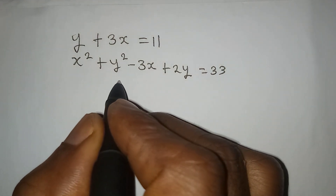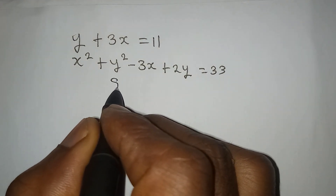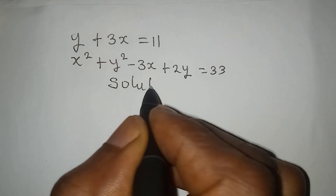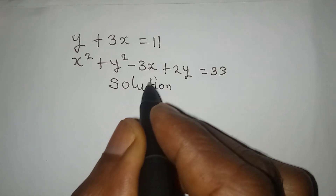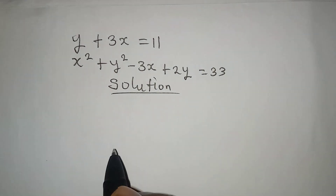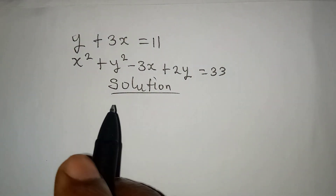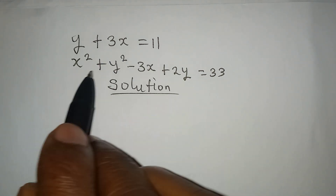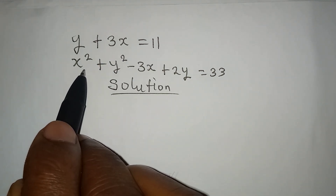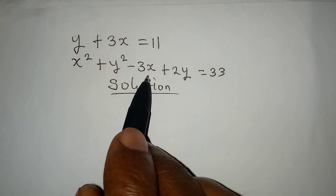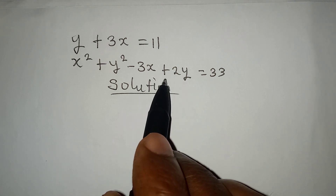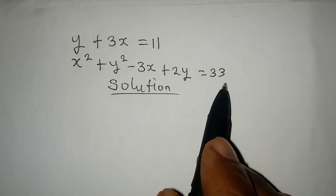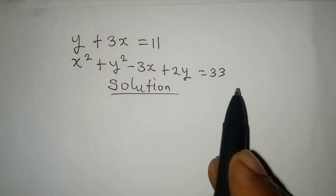Hello everyone, let's solve this problem quickly. We have y plus 3x equals 11, and x squared plus y squared minus 3x plus 2y equals 33.